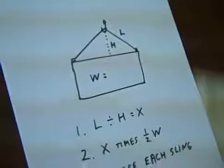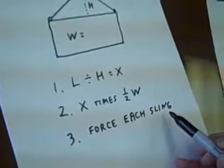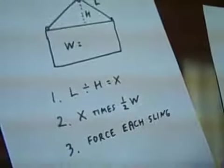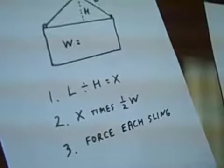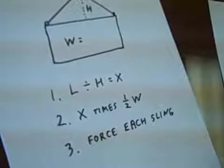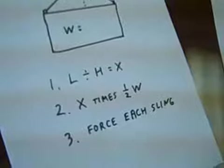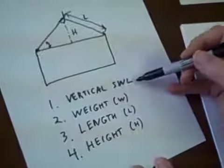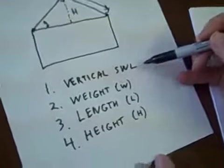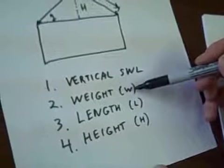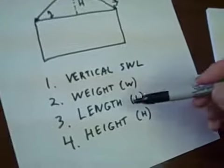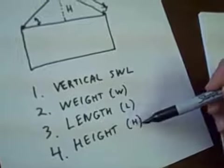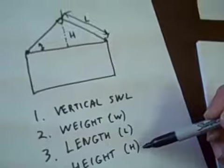If this answer of the force that's needed or that's exerted on each sling is higher than the safe working load, then it's not safe. So to review, the four things we needed to know was the vertical safe working load from the strap itself, the weight, the length of the strap which we call L, and then the height which is the distance above the load that the hook is.